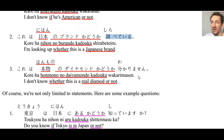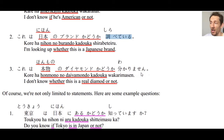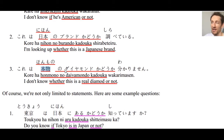日本のブランドかどうか調べている. Number three: これは本物のダイヤモンドかどうかわかりません — I don't know whether this is a real diamond or not. 本物 means real or genuine; ダイヤモンド is katakana for diamond. かどうか — a real diamond or not — わかりません, I don't know.